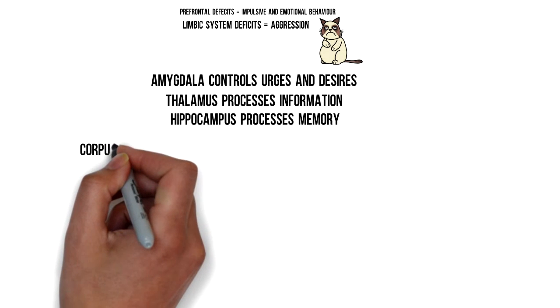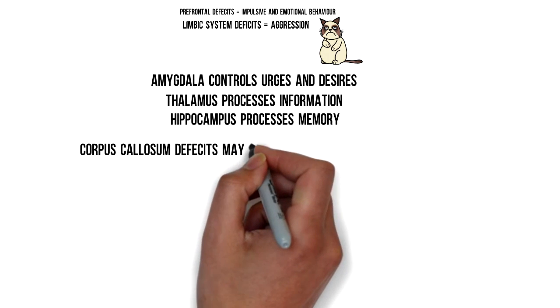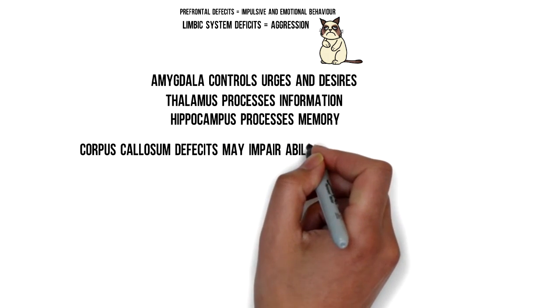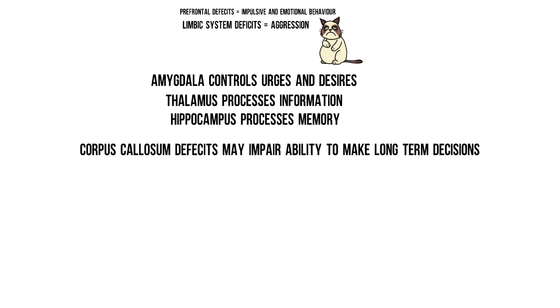The deficits found in the corpus callosum might make it harder for the two sides of the brain to communicate towards each other and this will make it difficult to think through long-term consequences and make decisions.